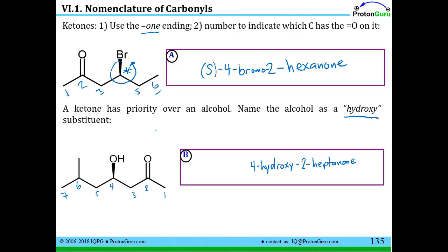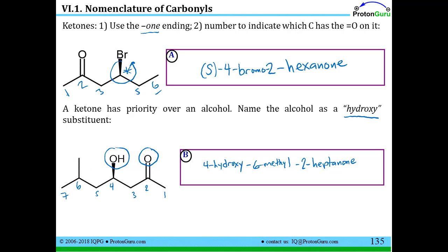In addition to the ketone and hydroxy group, we also have a methyl at position six, so we add 6-methyl to the name. Alphabetically, hydroxy comes before methyl. We also have a chiral center at the carbon bearing the OH — not at the gem-dimethyl carbon, since those two methyl groups make it non-chiral. Assigning priorities gives us the R configuration. The full name is R-4-hydroxy-6-methyl-2-heptanone.